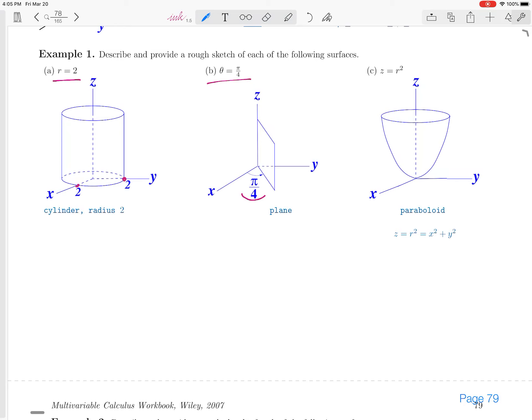rotated pi over 4 radians away from the x-z plane. If you are pi over 4 radians away, you are somewhere on this plane right here. So theta equals pi over 4 actually describes a plane.